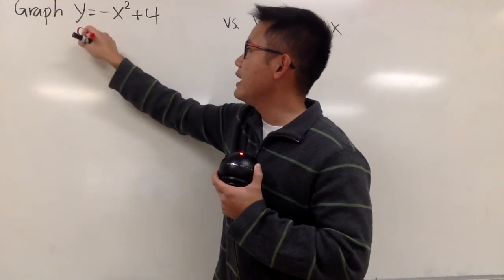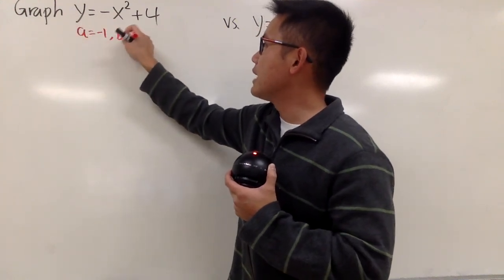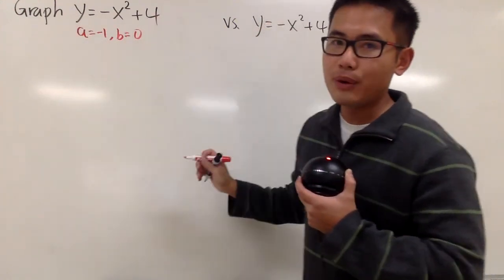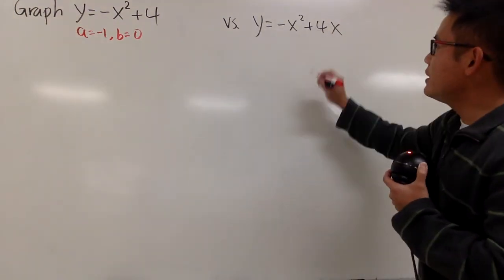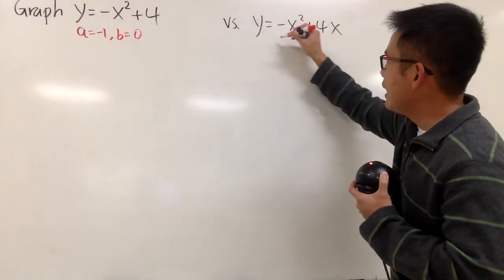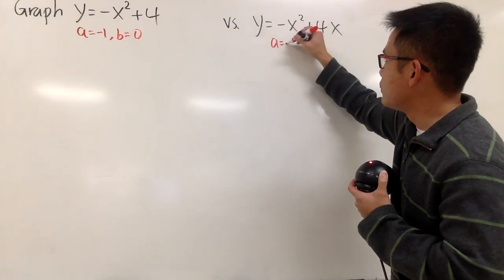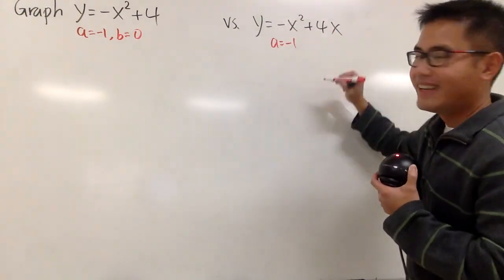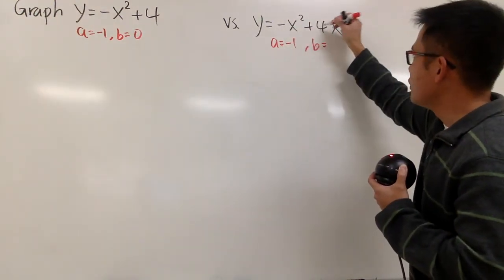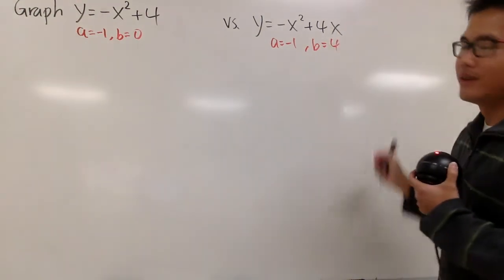So in this case, the a is negative 1, and the b is actually 0. This is the c value. In comparison to this, this right here is a b value, and we will have a being negative 1, right, negative 1. And the b is a number in front of the x, which is the 4.